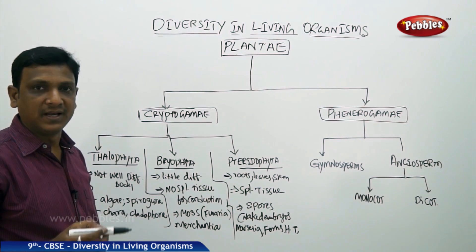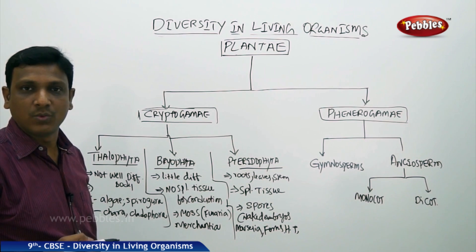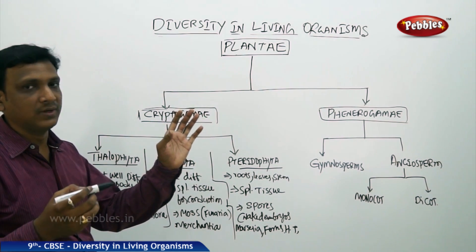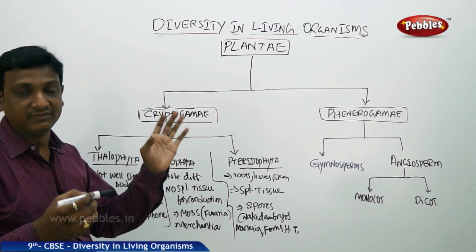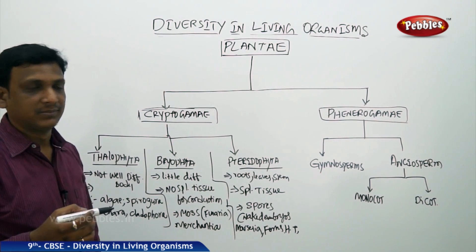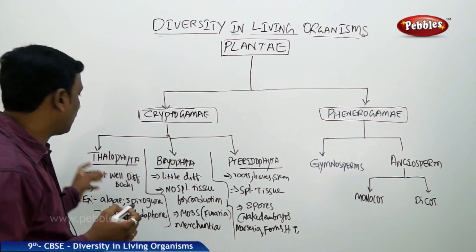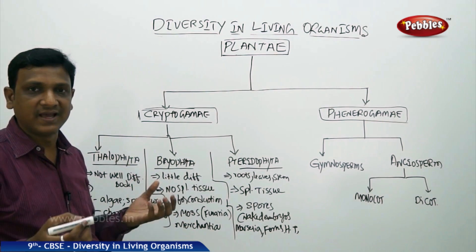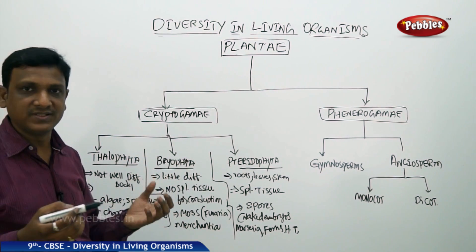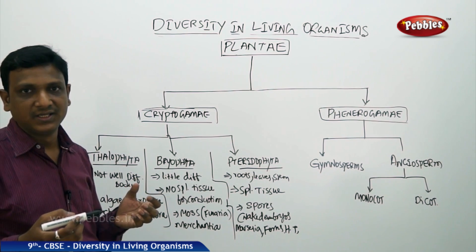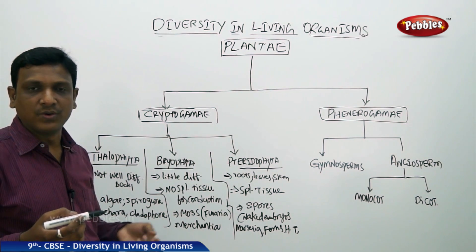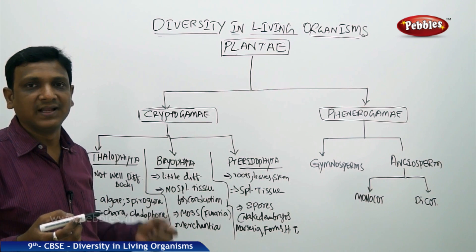When we say 'plant,' we imagine a stem, root, leaves, flowers, fruits, buds — everything. That is a well differentiated plant. But Thallophyta is a plant which does not have any special structure like root or stem. You cannot differentiate. It will be like a green filament — what we generally call algae.